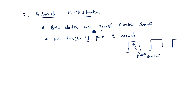This is the introduction to multivibrators: bistable multivibrator, monostable multivibrator, and astable multivibrator. Our next task is to study each individually in depth. The bistable multivibrator has two classifications — collector-coupled and emitter-coupled — and in collector-coupled there are fixed bias and self-bias types. We will cover all of these in the coming videos.